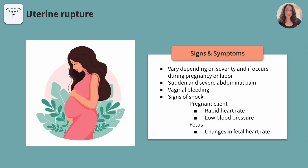The signs and symptoms of uterine rupture can vary depending on the severity of the tear or rupture and whether it occurs during pregnancy or labor. These clients may present with sudden and severe abdominal pain, vaginal bleeding, and signs of shock. This includes a rapid heart rate and decreased blood pressure in the pregnant client and changes in fetal heart rate in the baby. If the rupture occurs during labor, it can lead to a loss in fetal station and cessation of contractions.